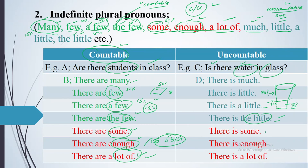Note that with countable nouns we use 'are,' and with uncountable we use 'is.' 'There is some' means 50 percent. 'There is enough' depends on your need — it can range from 10 to 100 percent. 'There is a lot of' means the glass is overfilled — 101 percent, water falling over the edge. That covers the indefinite plural pronouns for uncountable nouns.